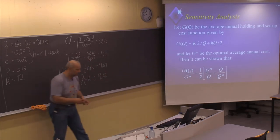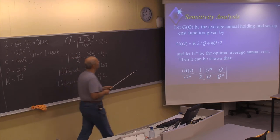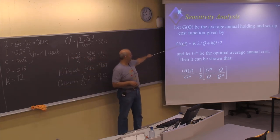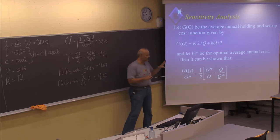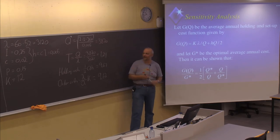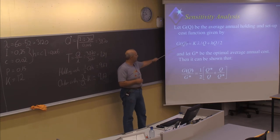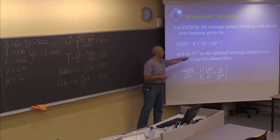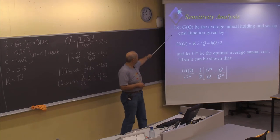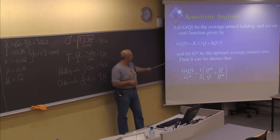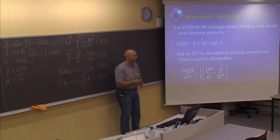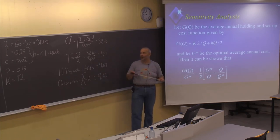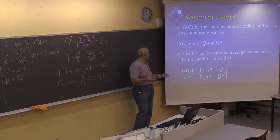We can also talk about sensitivity. This is why Wilson's formula or the EOQ formula has gained so much popularity — it is so-called insensitive. Some parameters are quite difficult to estimate in the real world. The demand might be relatively easy to estimate from historical data, and the unit cost C might be straightforward. But the internal interest rate and the ordering cost K can be quite difficult to estimate accurately.